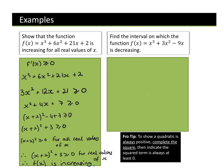Find the interval on which the function is decreasing. If it's decreasing, we know our gradient has to be less than or equal to zero. Step one: differentiate x³ + 3x² − 9x. Bring the power down, decrease the power by one: dy/dx = 3x² + 6x − 9. This is our gradient function.